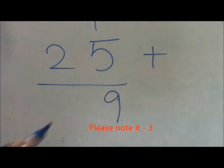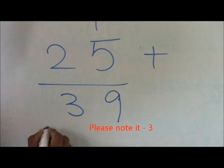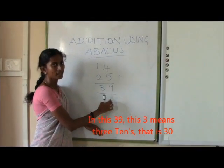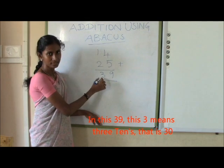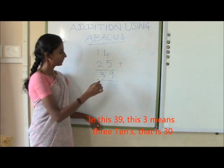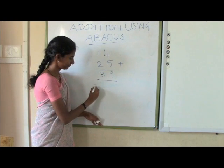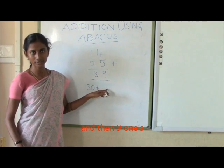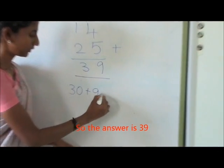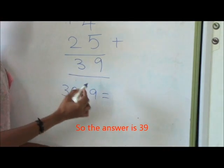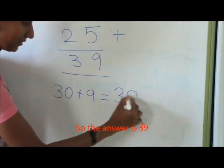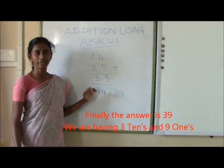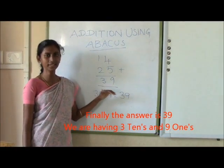Please note: 3. This 3 in 39 means 3 tens, that is 30. And then 9 ones. So the answer is 39. Finally, the answer is 39. We are having 3 tens and 9 ones.